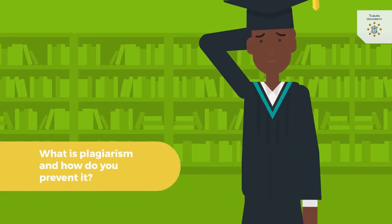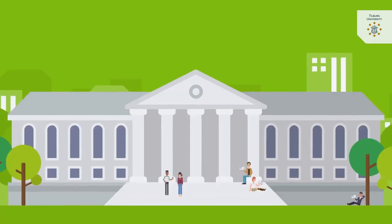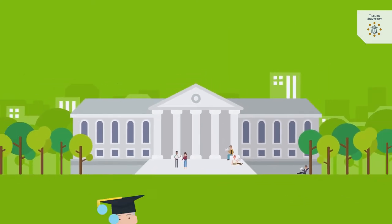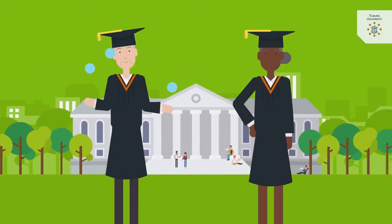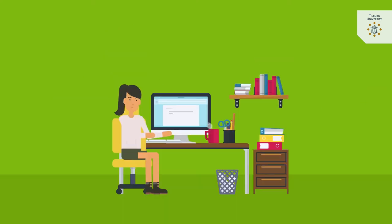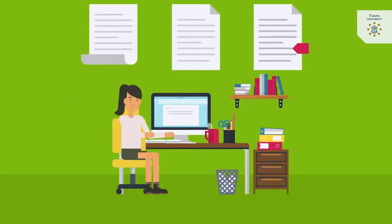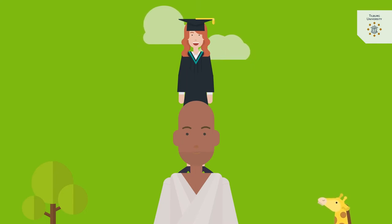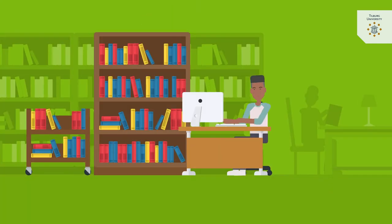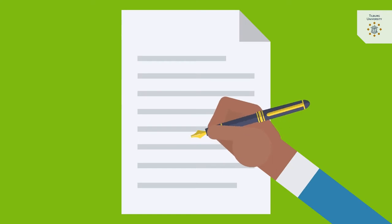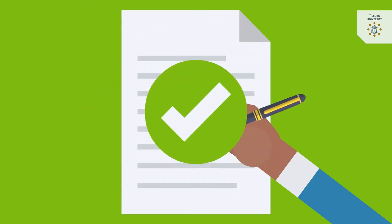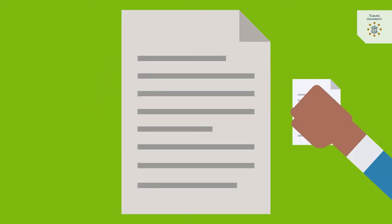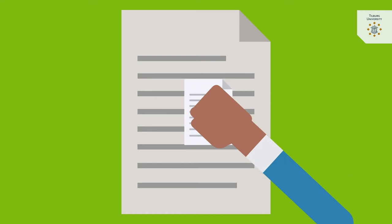In this knowledge clip: what is plagiarism and how do you prevent it? The aim is that in academic work you demonstrate your own skills and ideas. At the same time, you're expected to use sources from others who have gone before you — standing on the shoulders of giants. How you use those sources is of great importance. You must make sure that your work can be judged as being your own. Preventing the opposite, plagiarism, is what this clip is about.